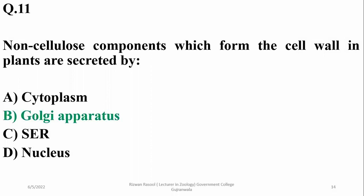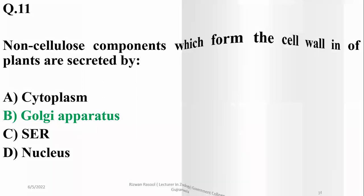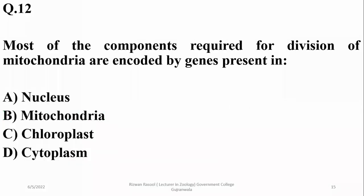Question 11: Non-cellulose components that form the cell wall in plants — they are secreted by the Golgi apparatus. Right option is B. Both cellulose components and non-cellulose components: specifically non-cellulose components are secreted by the Golgi apparatus.